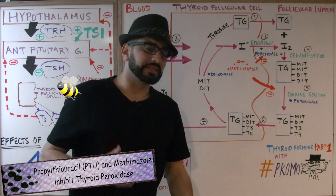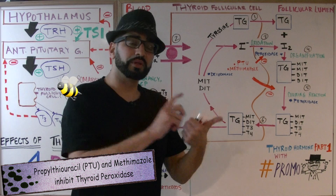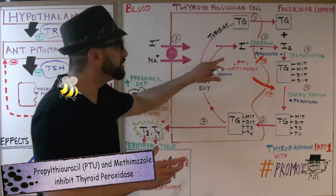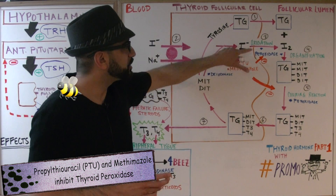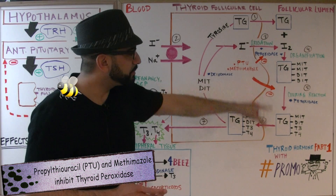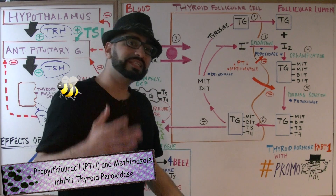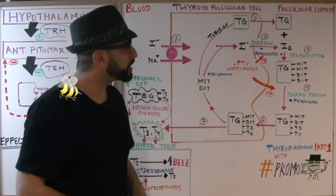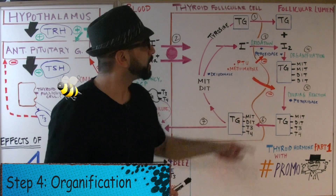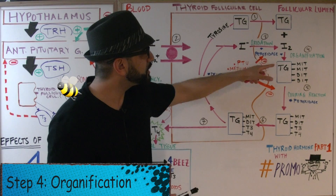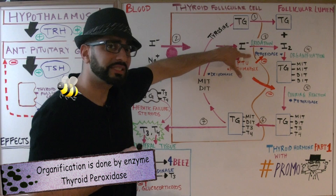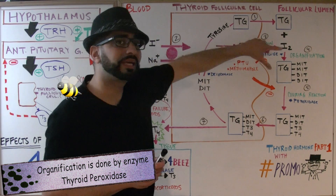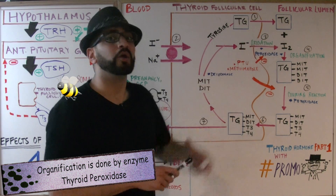Why are we trying to inhibit thyroid peroxidase? Next week, when we talk about too much thyroid hormone, these medications help — if they inhibit that step, then ultimately we're not synthesizing too much thyroid hormone. Step 4 is organification, which is again done by the same thyroid peroxidase enzyme, so the same medications will inhibit that step as well.